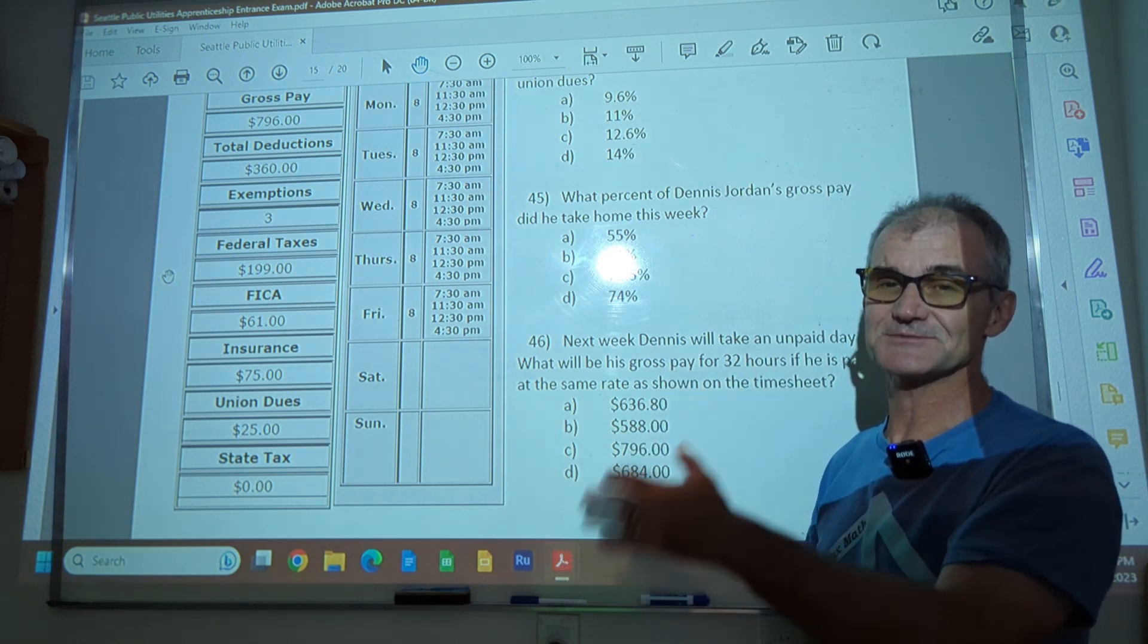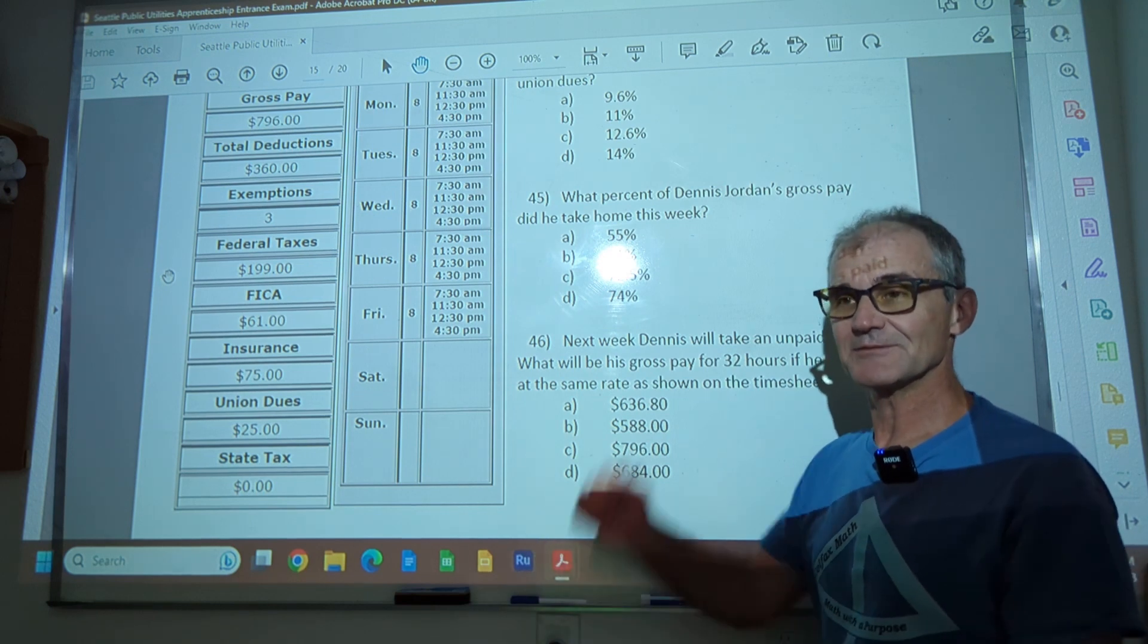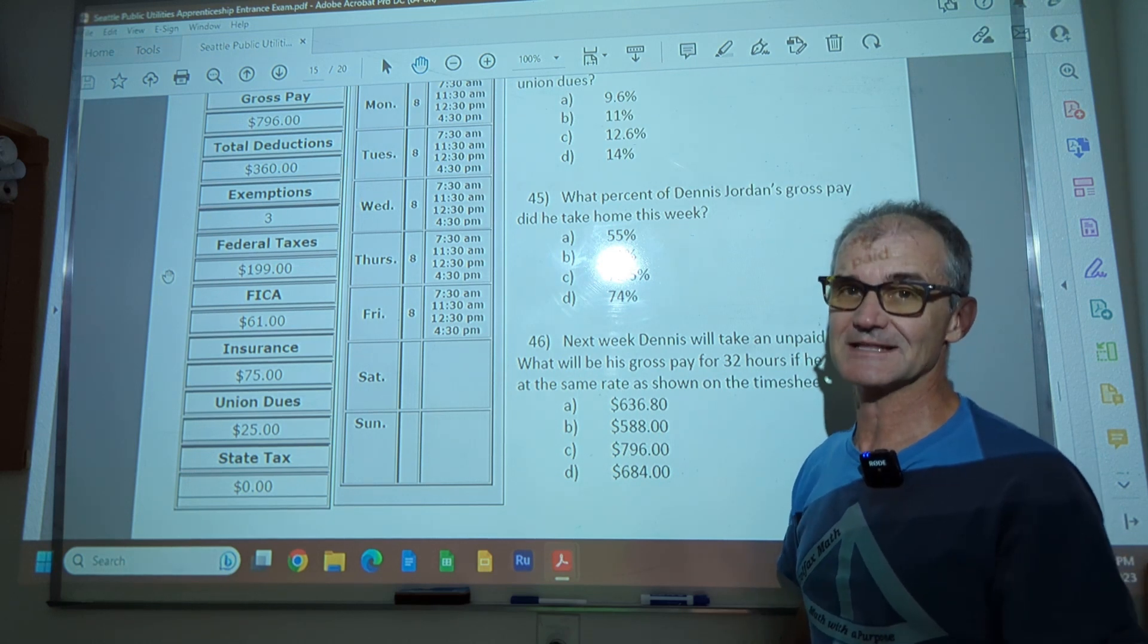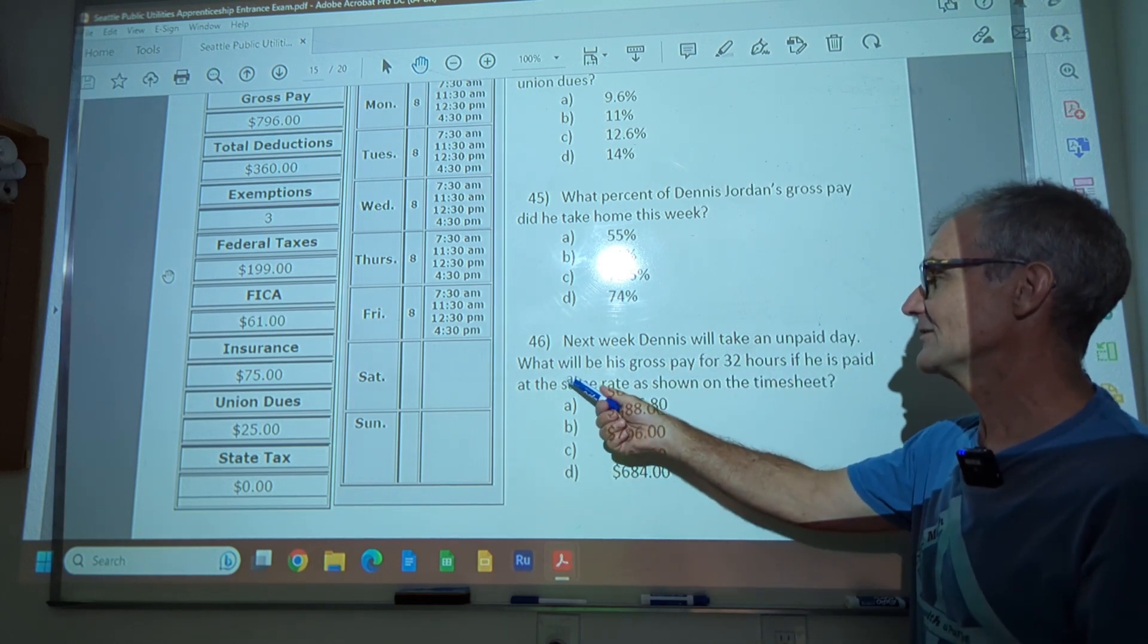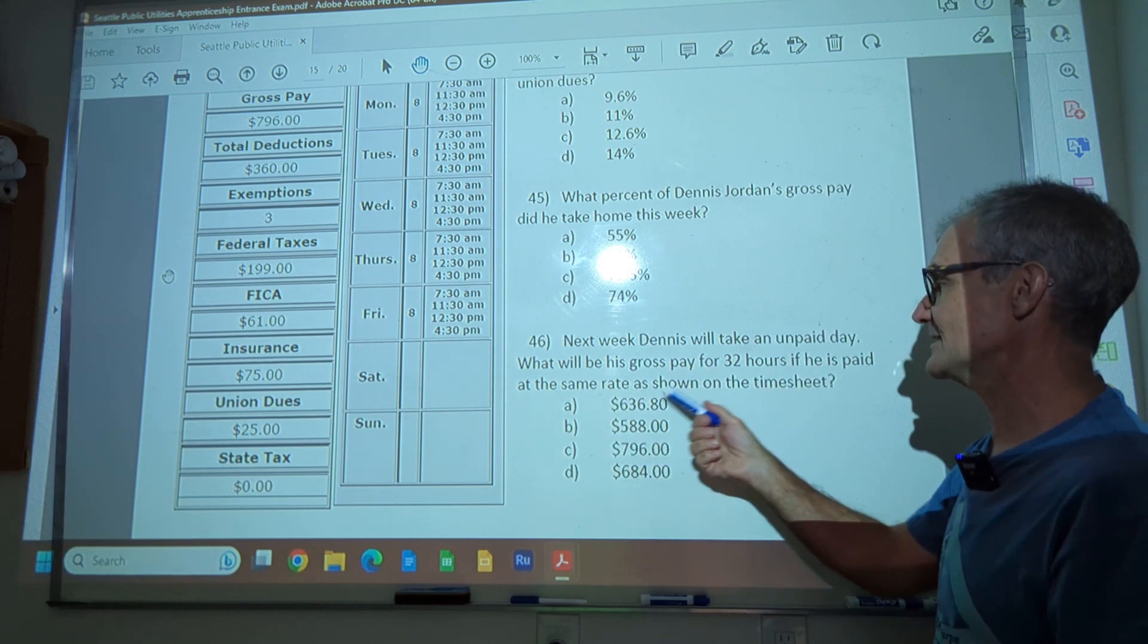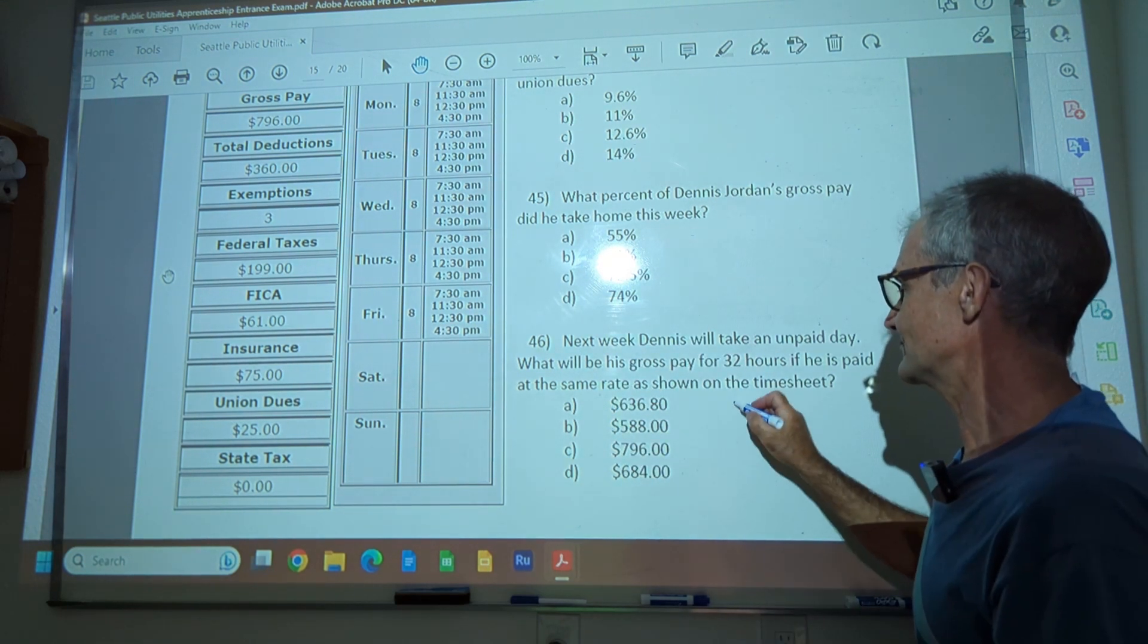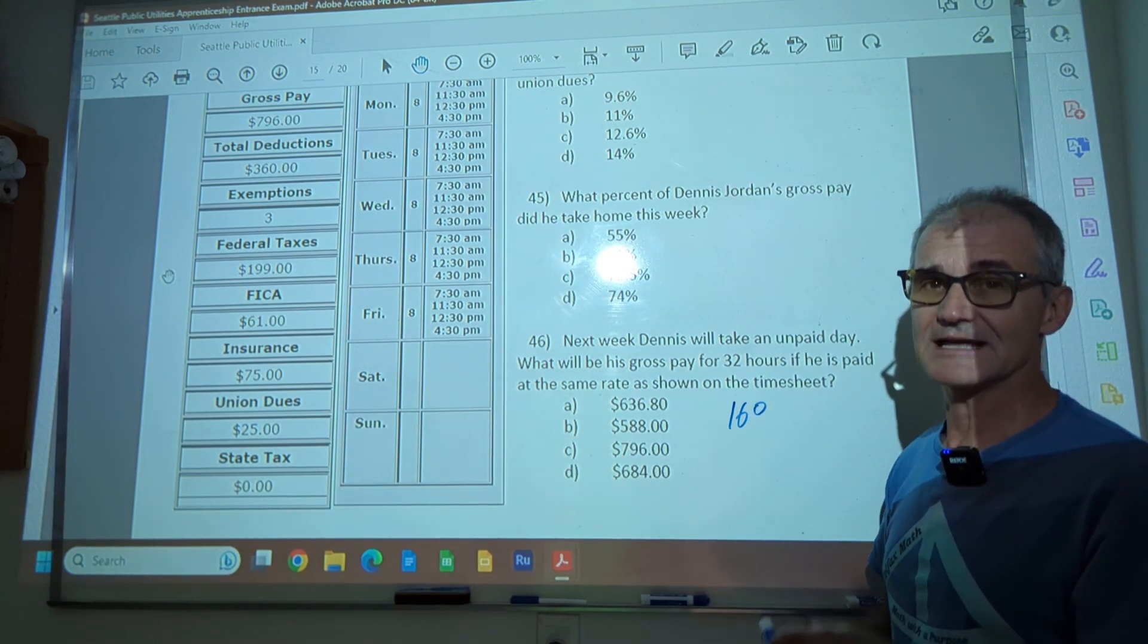If you hit that like button, it really helps build the channel and gets this information out to people who might need it for a standardized math test. Okay. 46. Next week, Dennis will take an unpaid day. What will his gross pay be for 32 hours if he is paid at the same rate as shown on the timesheet? If you remember the first one on a timesheet, we figured out his daily rate. His daily rate was 160. All right. Again, that was approximation. It was like 19.60 an hour. We rounded up to 20 bucks an hour. 20 times eight hours is 160.